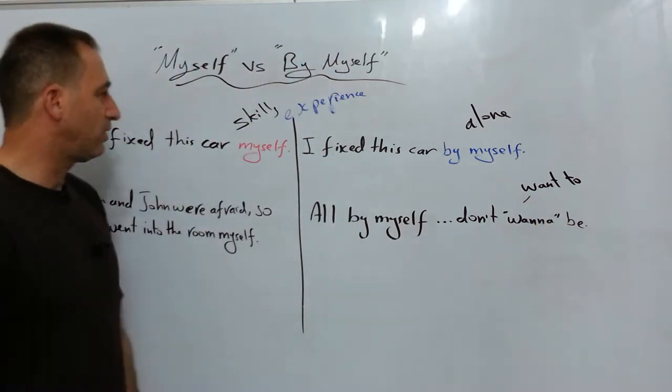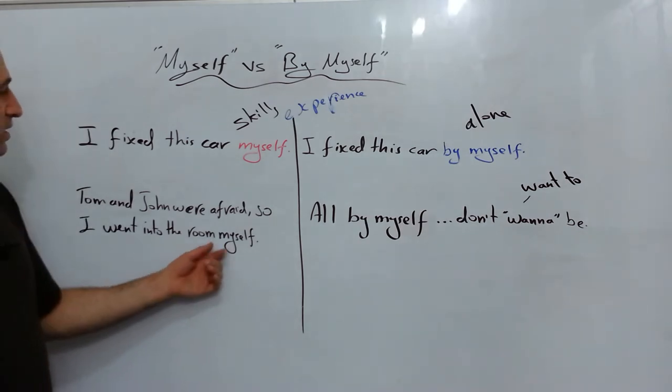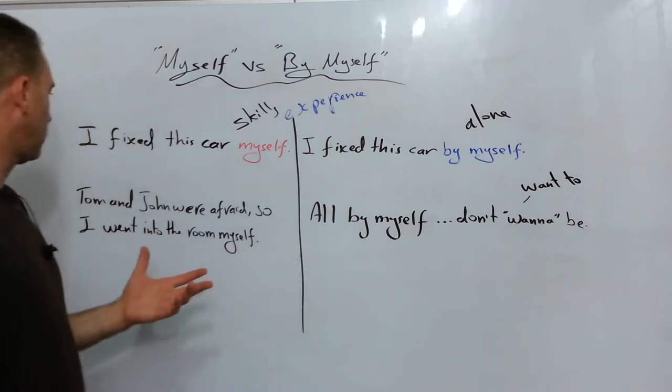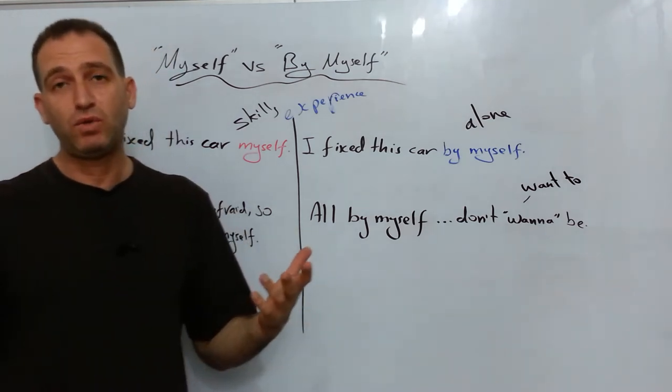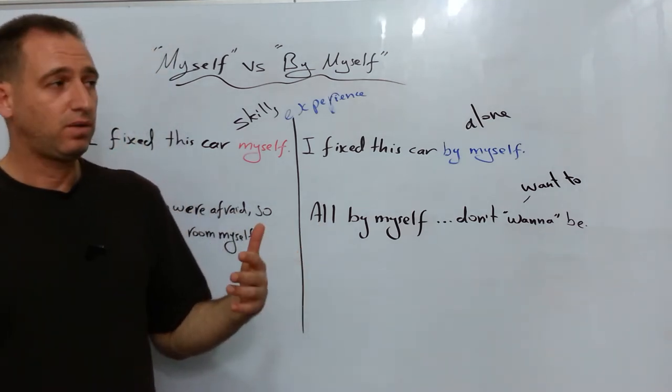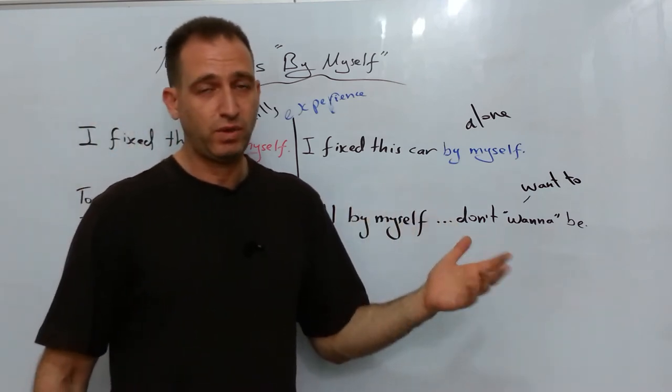Another example of using myself is this one. I've got two friends, Tom and John. And we hear some noise in the bedroom. So they were afraid to go to the bedroom. So I had to do it myself.